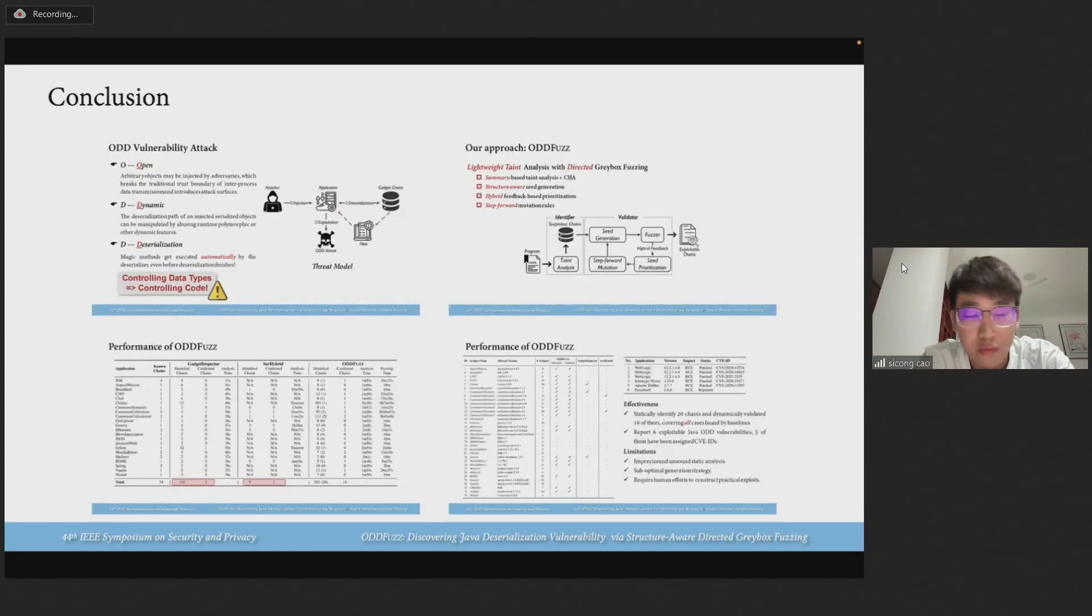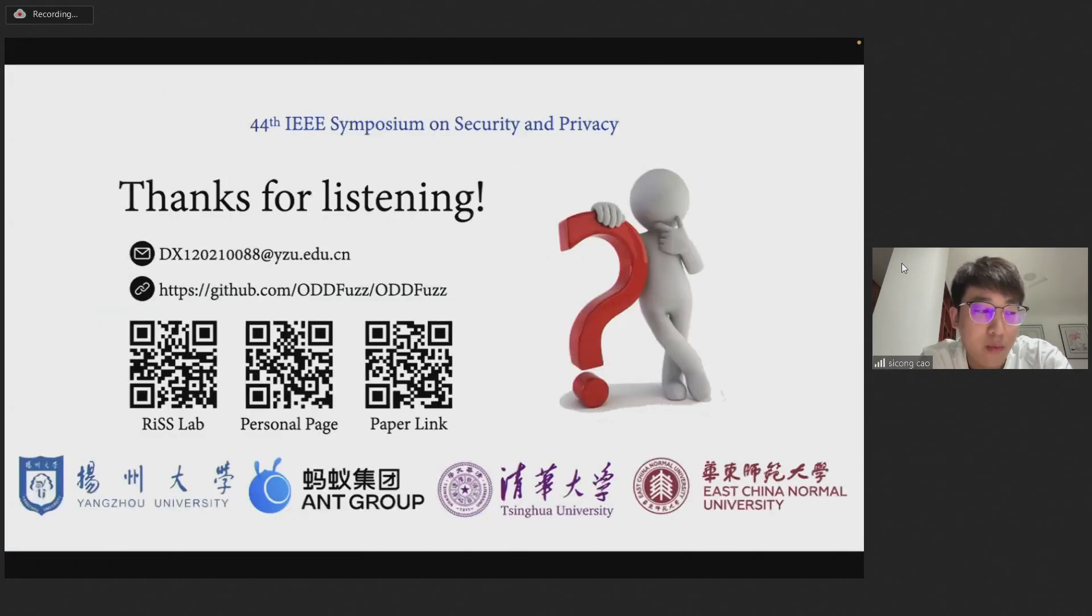In conclusion, we propose a novel hybrid solution which combines taint analysis and directed fuzzing for Java audit vulnerabilities. Results show that our approach could discover 16 known vulnerabilities and find six new vulnerabilities in real-world applications. That's all my presentation. Thanks for your listening. If you are interested in our work, please contact us. The website is shown below. We will open source in the near future.